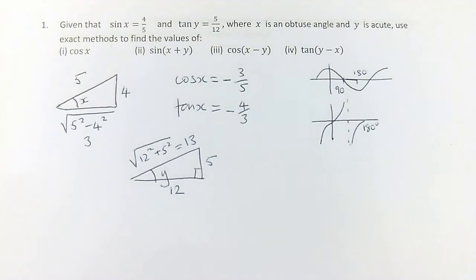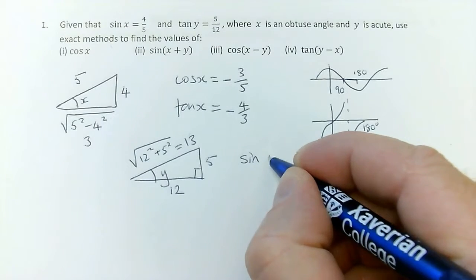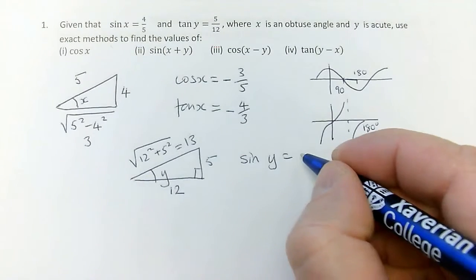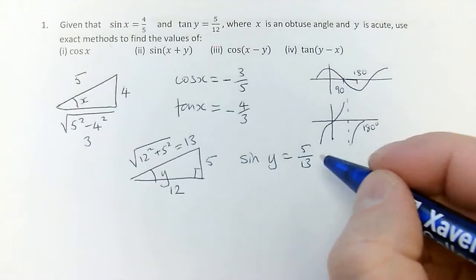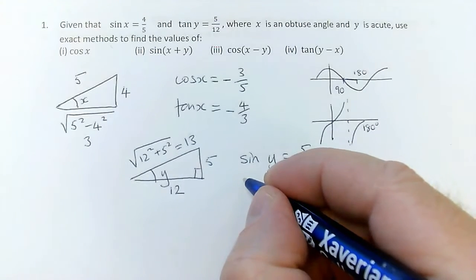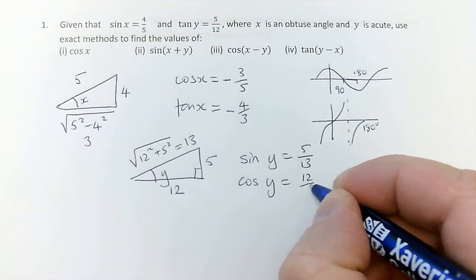So from this triangle, I can say that sin of y equals, opposite over hypotenuse, 5 thirteenths. And y is an acute angle, so it will be plus 5 thirteenths. And cos of y, adjacent over hypotenuse, will be 12 thirteenths.